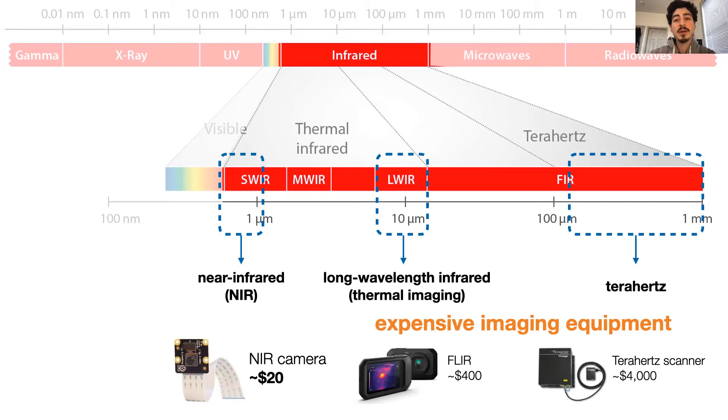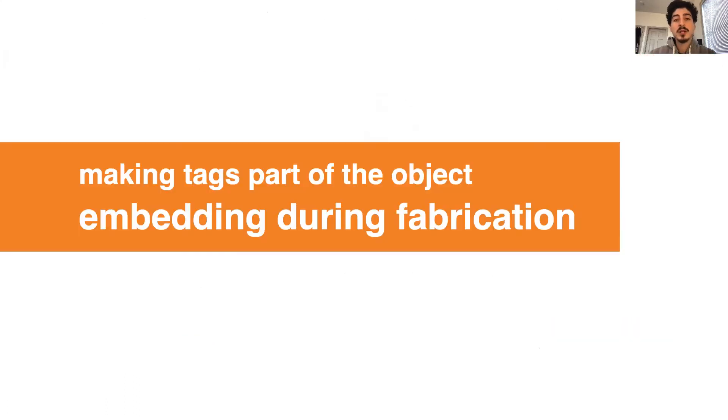However, near-infrared cameras are much more affordable, so they are particularly suitable for our purpose. In this project, we use a $20 NIR camera by Raspberry Pi. So now that we know more about near-infrared, I'd like to talk about how to embed infrared-based tags into 3D objects during the fabrication process.